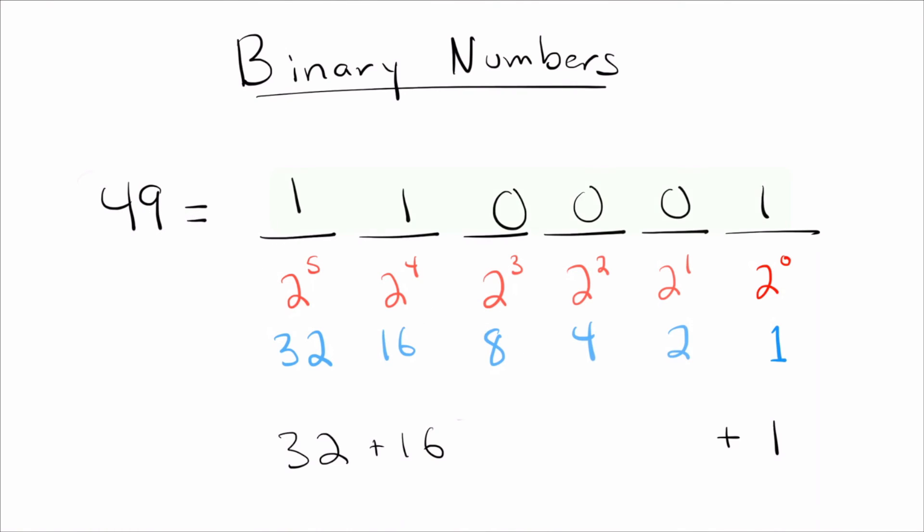And there we go. 110001 in binary is 49. And here I went from 2 to the 0 up to 2 to the 5th. There's no reason you need to stop at 2 to the 5th. You can go as high or as low as you want to go.